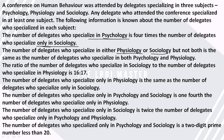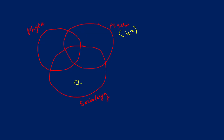The ratio of the number of delegates who specialized in sociology to the number of delegates who specialized in physiology is 16 to 17. So sociology is 16k and physiology is 17k.